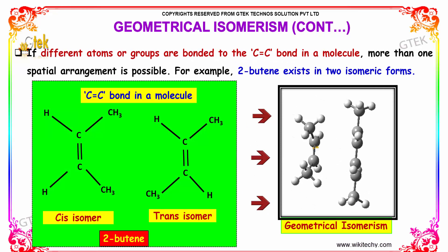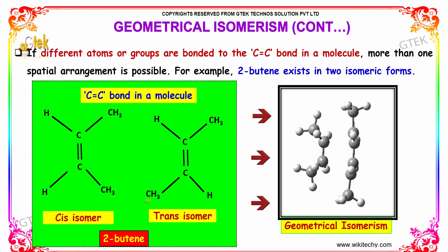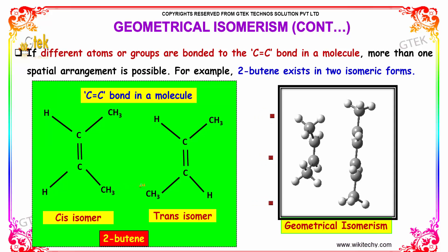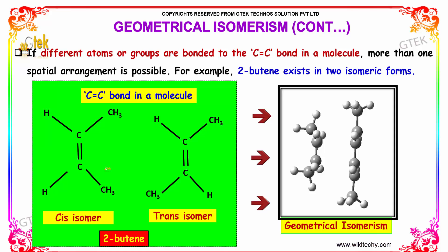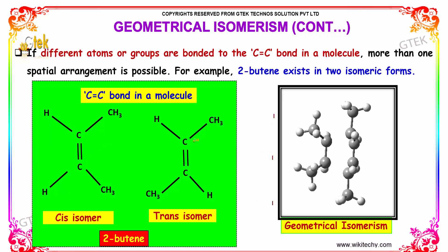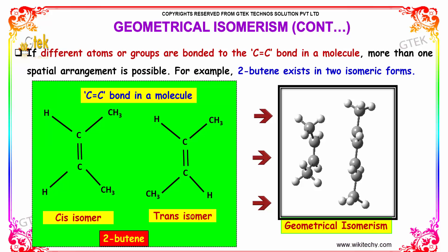If different atoms or groups are bonded to the C=C in a molecule, more than one spatial arrangement is possible. For example, 2-butene exists in two isomeric forms: the cis isomer and the trans isomer. The cis isomer is when the two similar groups are on the same side. Here the methyl groups and the hydrogen groups are in different positions, so it is known as the trans isomer.